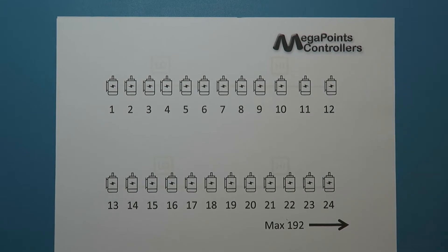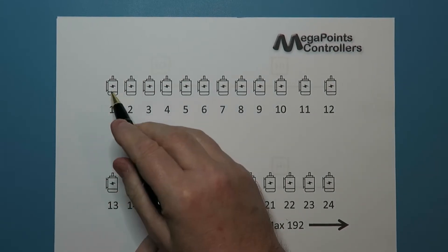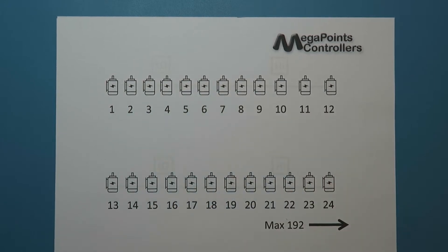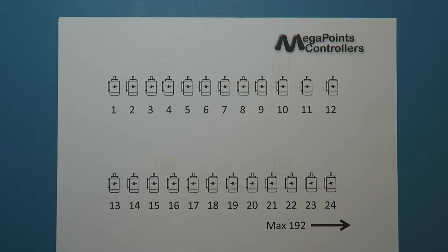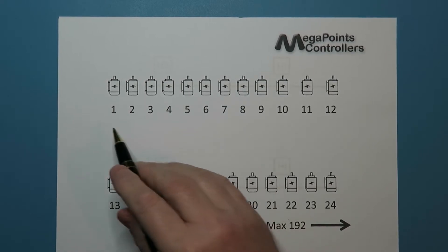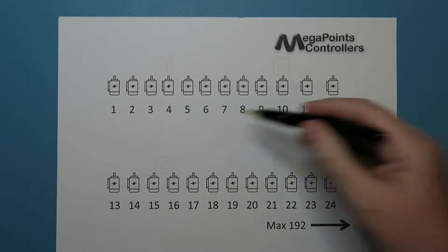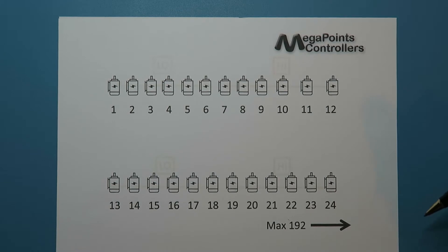If we look at a typical network, imagine each one of these is a point motor. Now if you have a starter kit or more than one board, then you'll want to address them all. Here I've shown the first 24 and you can go up to a maximum of 192 devices on this network for point control.